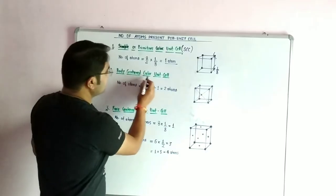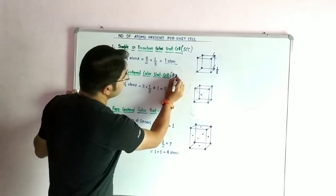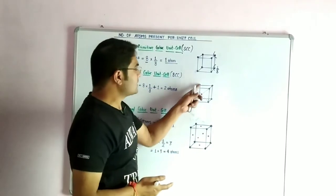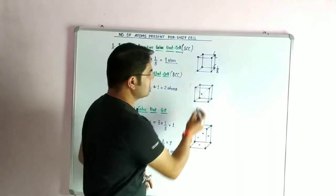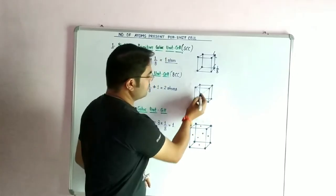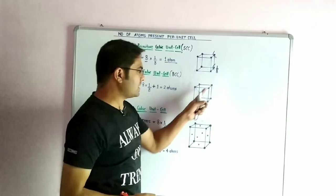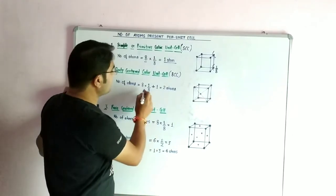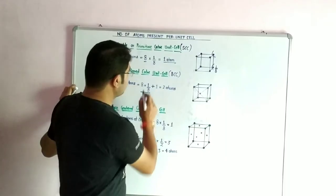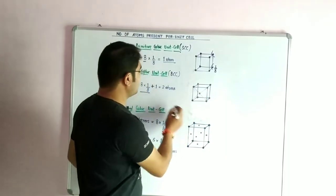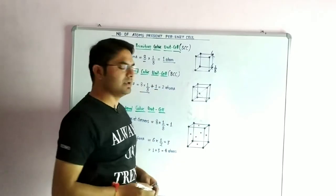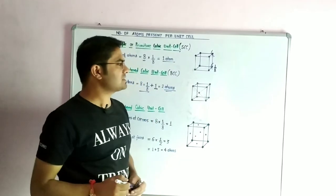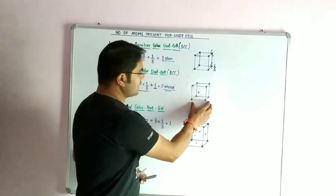Next is the body-centered cubic unit cell, abbreviated as BCC. By definition, the constituent particles are present at the corners and at the center of the body. If we talk about contribution: the number of atoms at corners is eight multiplied by one-eighth, and the number of atoms at the body center has a contribution of one. So one plus one equals two atoms per unit cell for BCC.